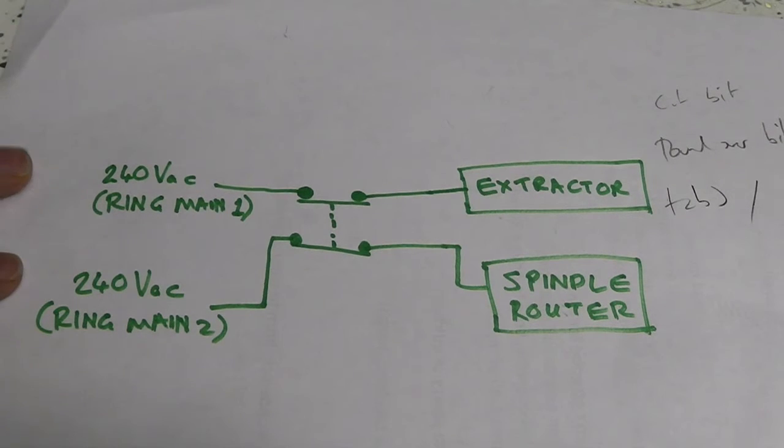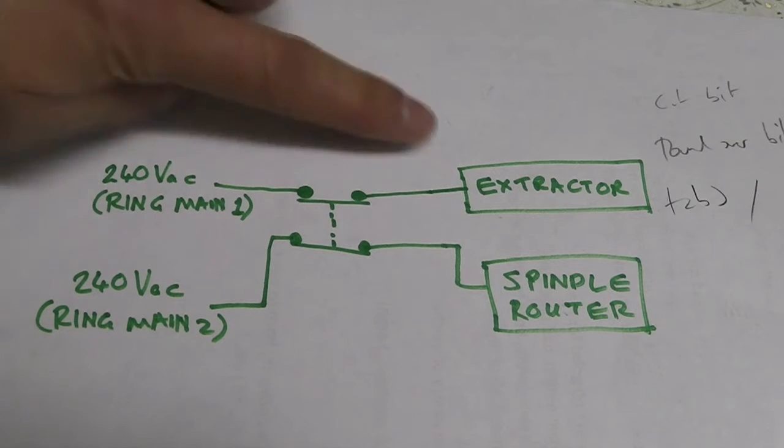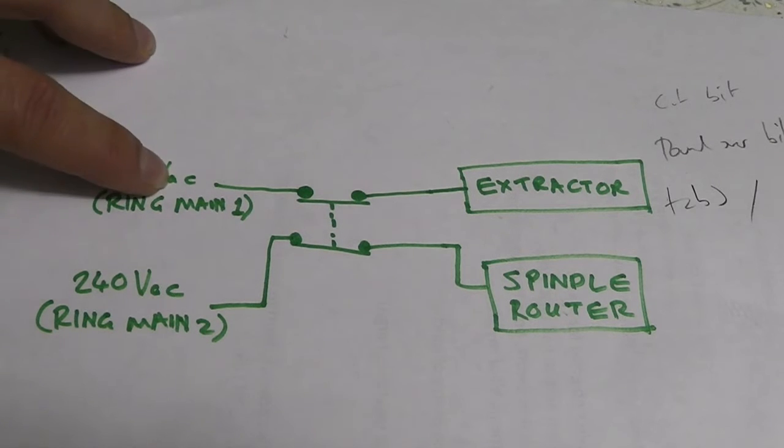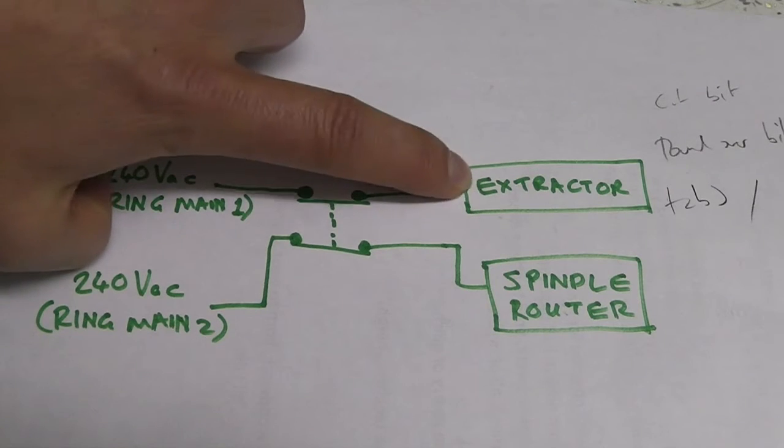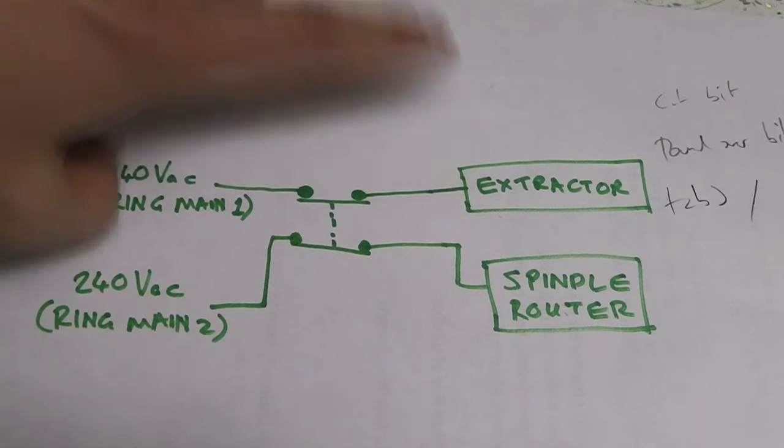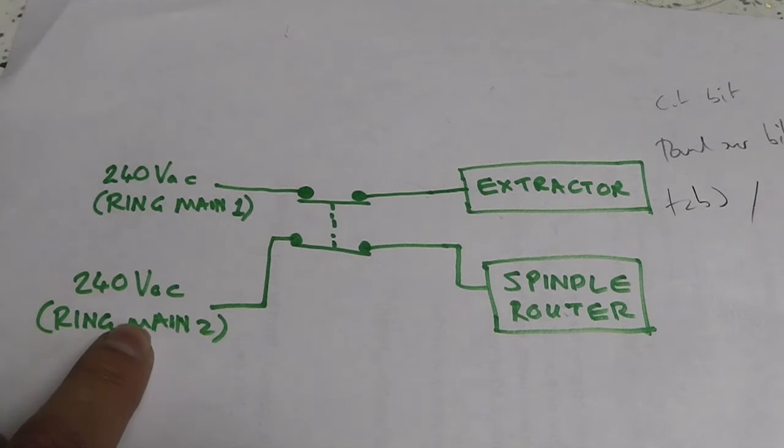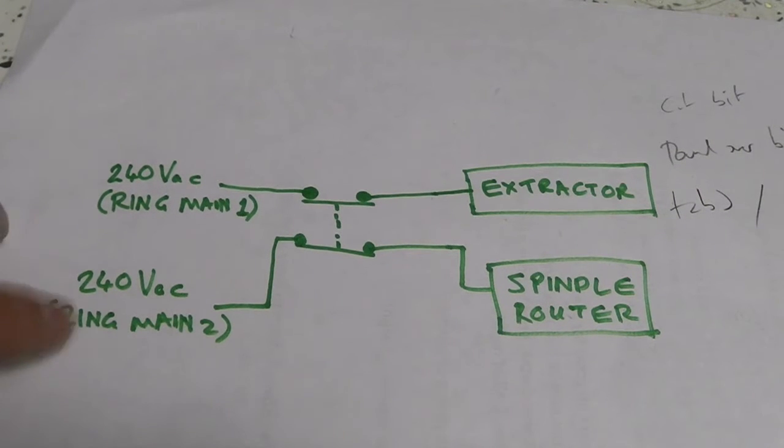Or for instance you may use actually two separate ring mains on your CNC machine. My friend Savas at the moment is running his extractor unit on one ring main because the extractor has this large induction motor that's causing a lot of ripples in the mains current, and on the other ring main he's got his spindle router. You would also maybe use two ring mains if you're going to be drawing more than 16 amps with your whole kind of machine setup.